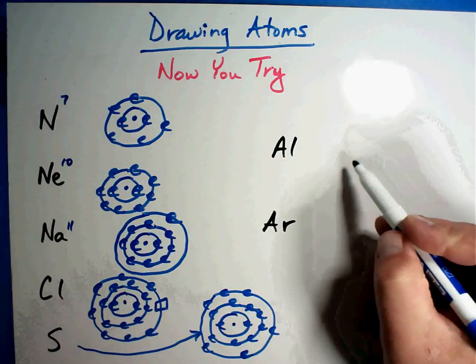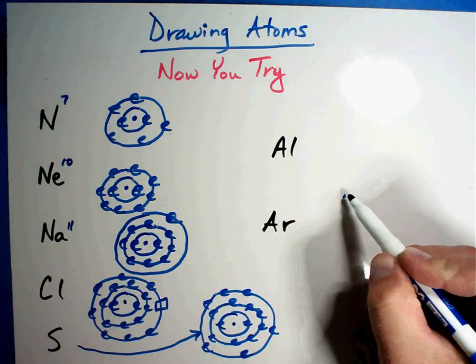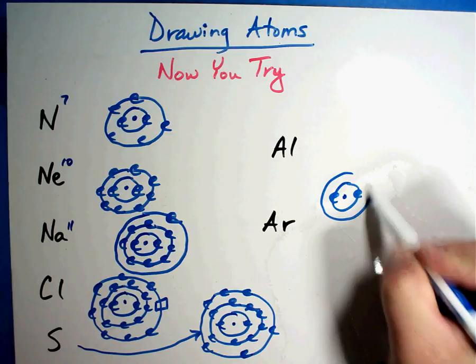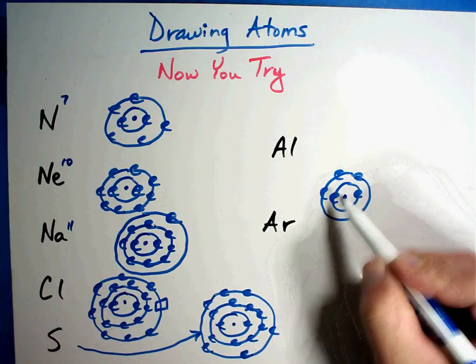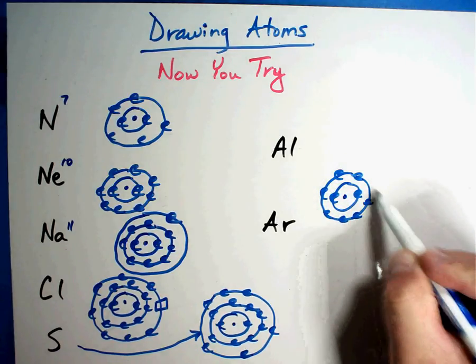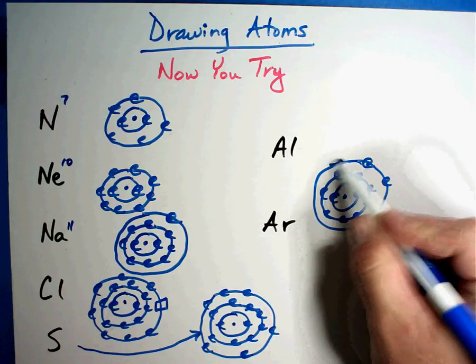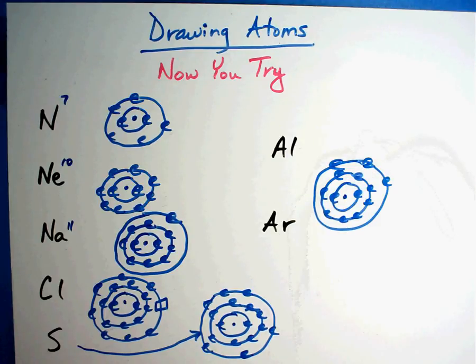Aluminum is number thirteen. Let's see. That would be two and then eight. Three, four, five, six, seven, eight and three in the outside. Not too difficult.